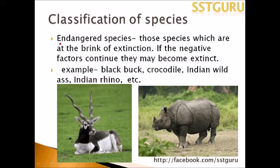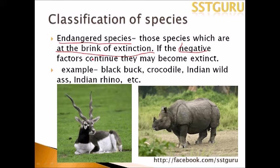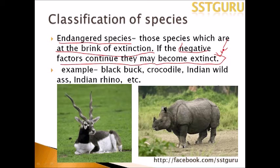Next comes the most important term: Endangered Species. Endangered species are those which are at the brink of extinction. If the negative or hostile factors continue, they may also become extinct. Examples of endangered species include the black buck, crocodile, Indian wild ass, and Indian rhinoceros.